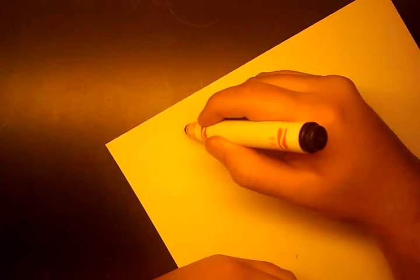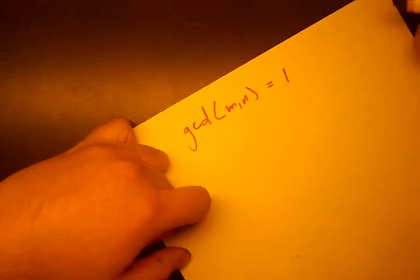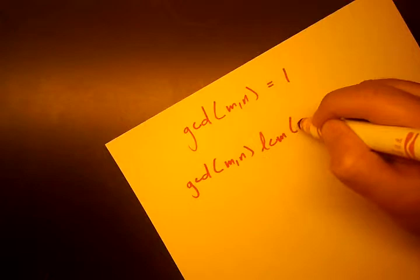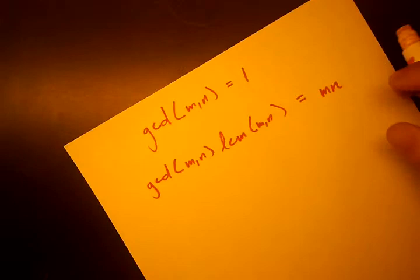So that means GCD of M and N has to equal 1 for this to work. And we know there is a formula that says the GCD of two numbers, M and N, multiplied by the LCM of two numbers, M and N, always equals the product of the two numbers. And look back in my proofs videos for a proof of this plus just a big array of number theory formulas.